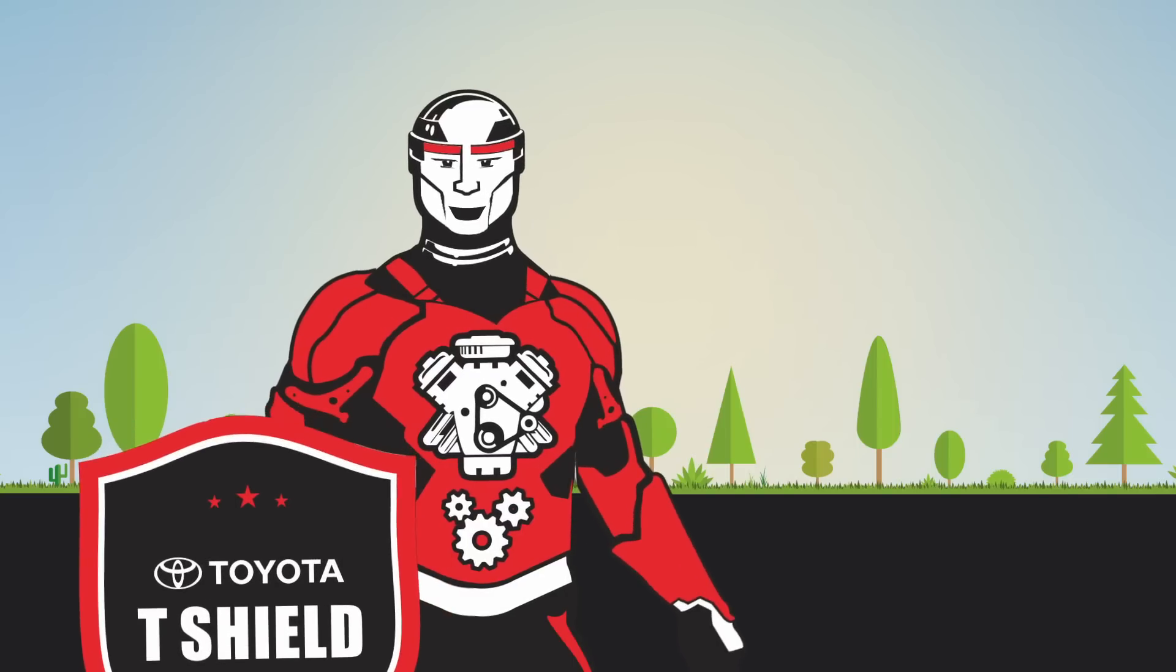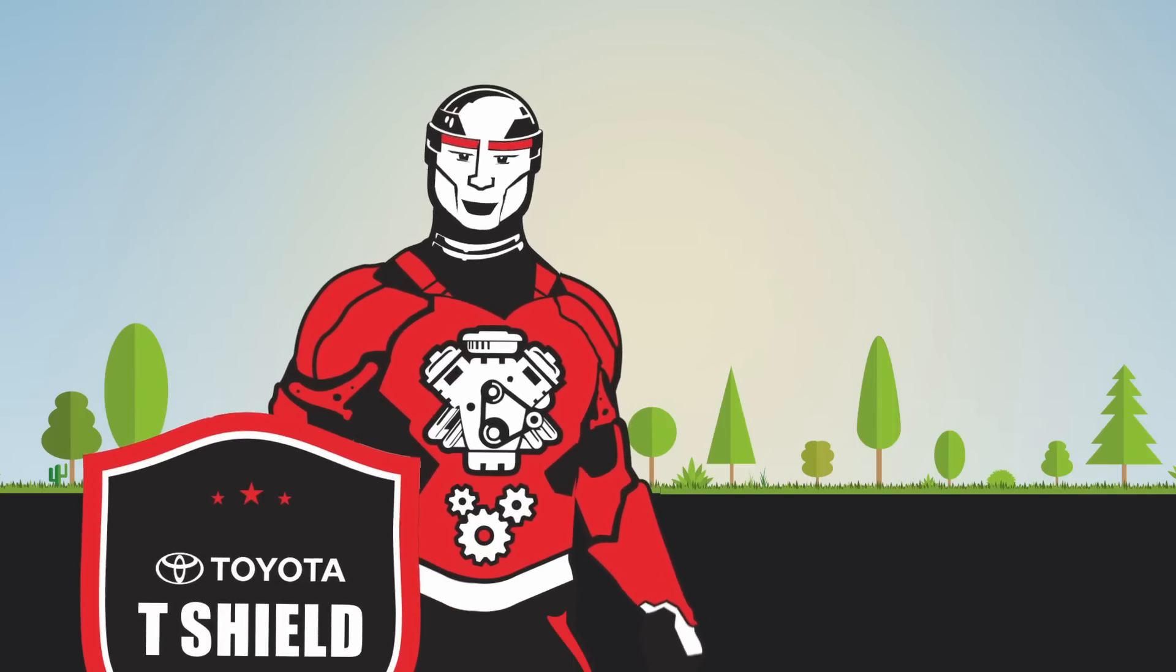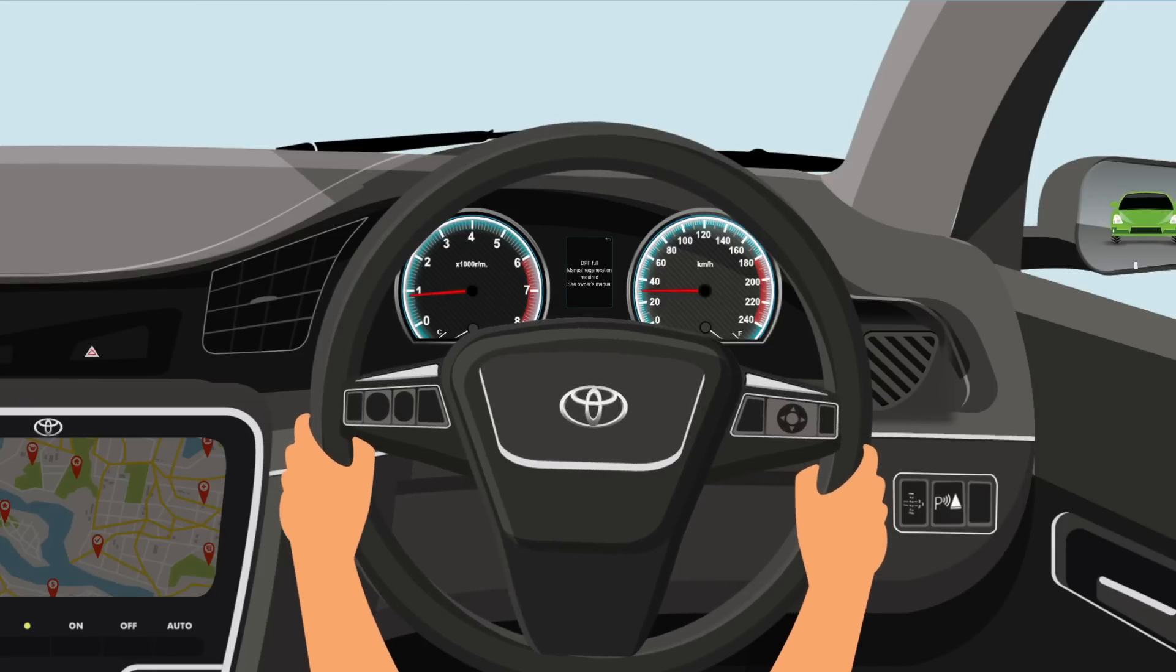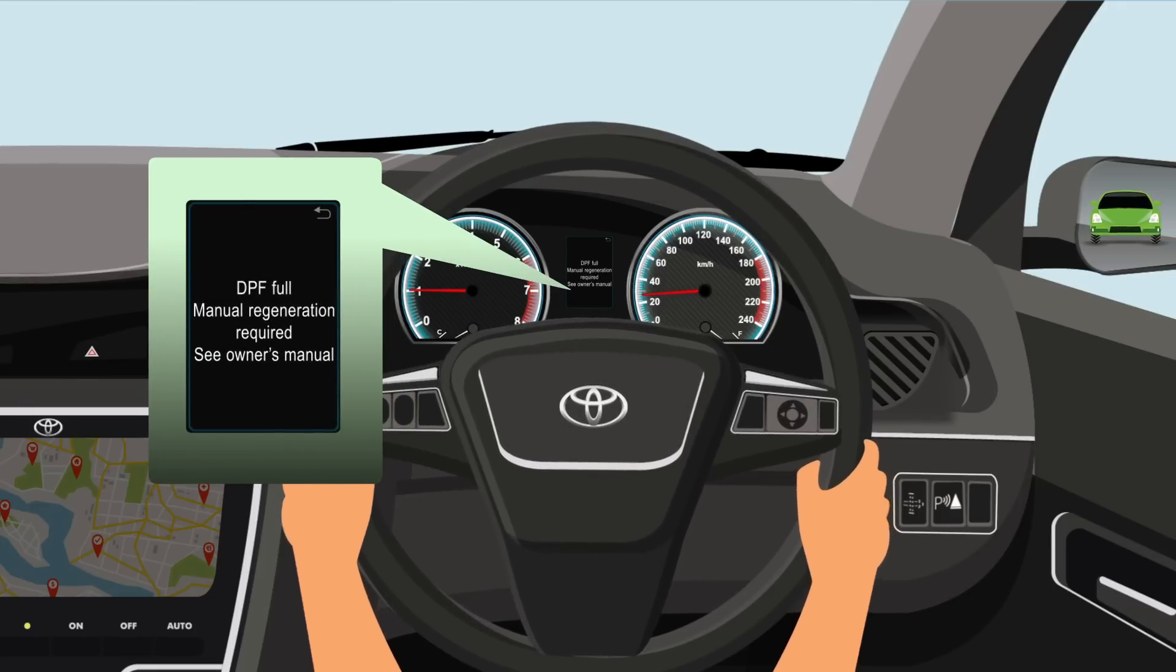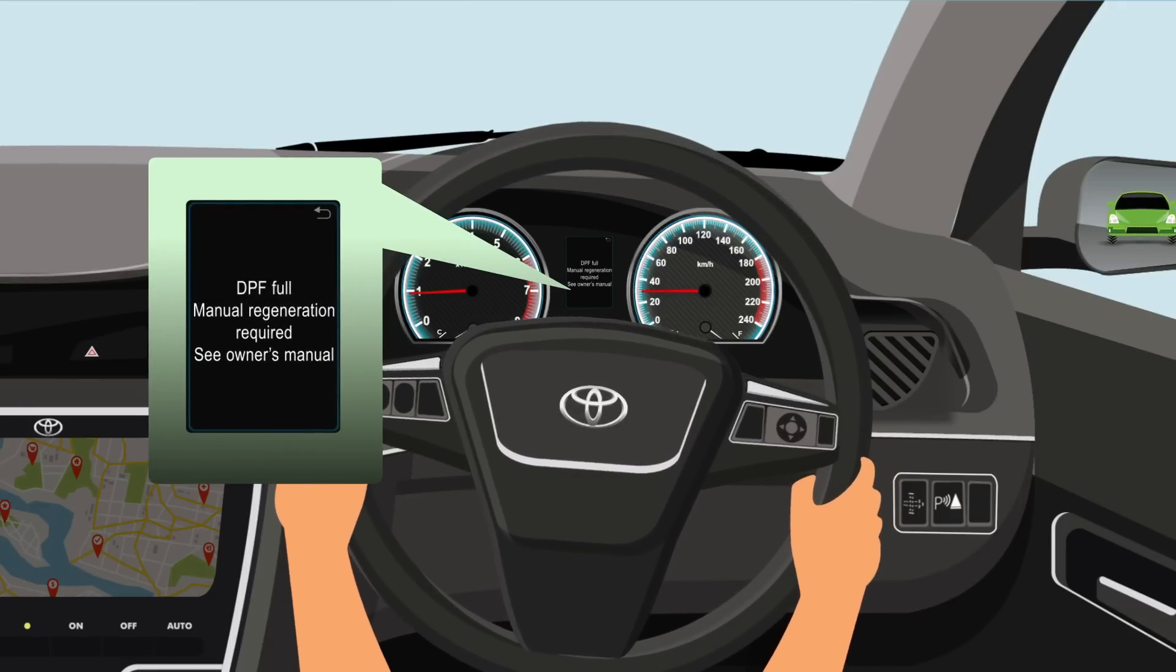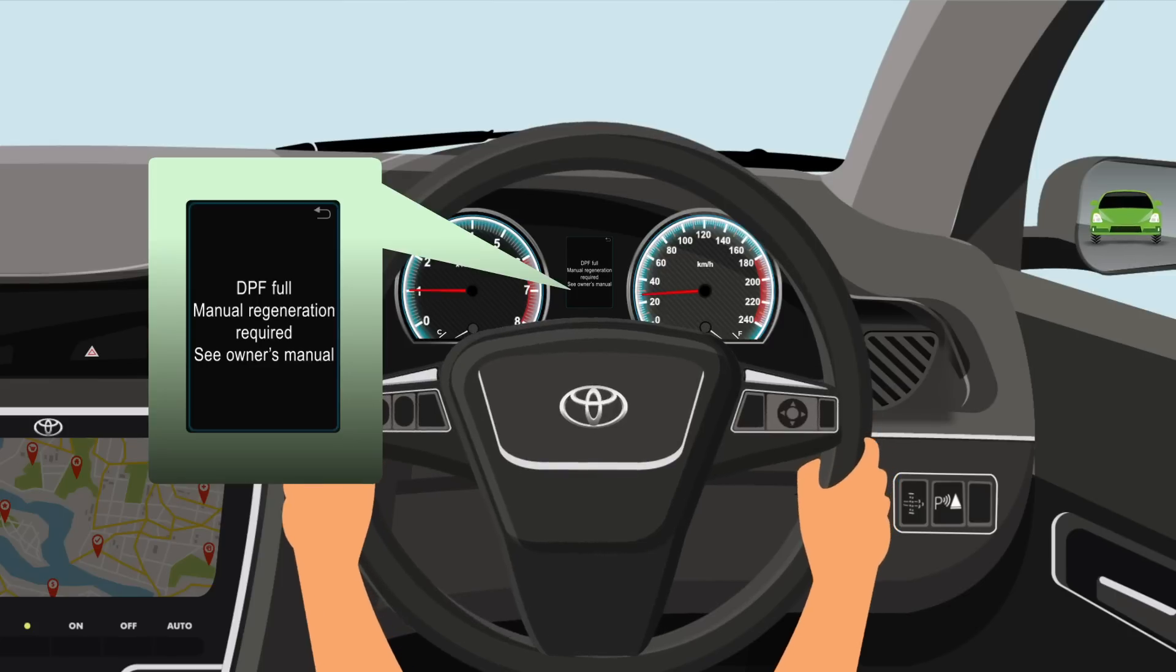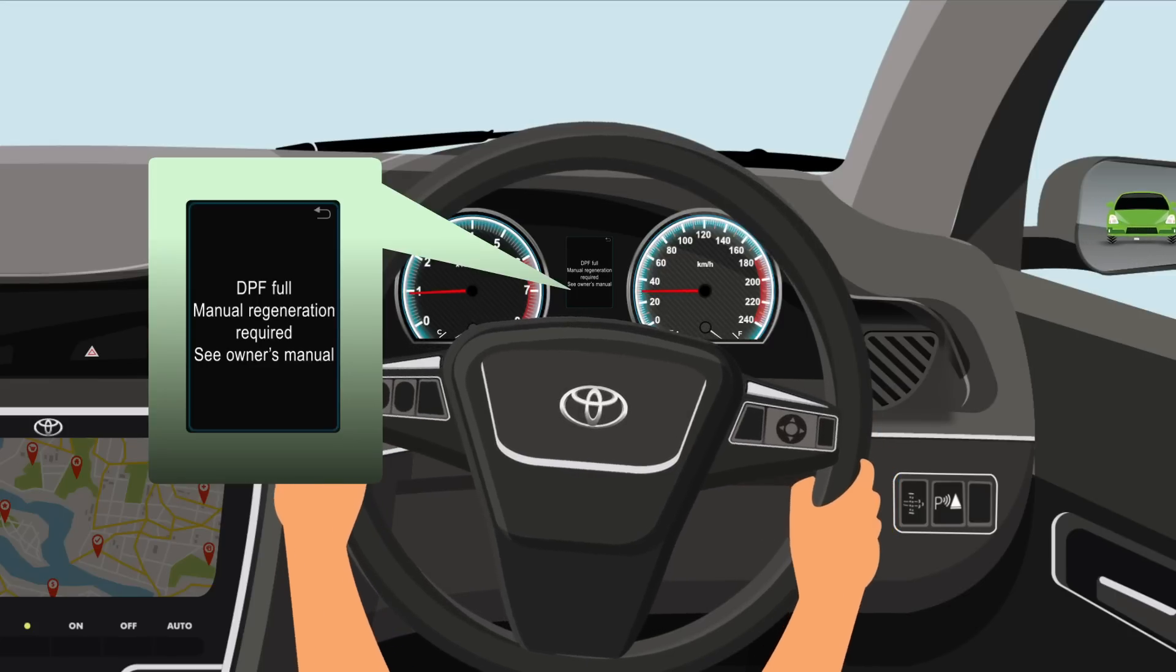Hi, I am T Shield. I shall guide you on what needs to be done when the DPF system warning message appears in your BS 6 diesel vehicle. This warning message is displayed due to the accumulation of carbon particles.